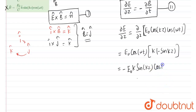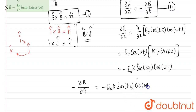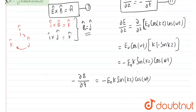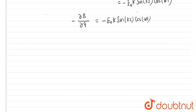E₀ and cos(ωt) are considered constant, and the differentiation of cos(kz) gives −k sin(kz). So we get: del E / del z = −E₀ k sin(kz) cos(ωt). We put that value from equation 1 into equation 2 and we get: del B / del t = −(−E₀ k sin(kz) cos(ωt)), so del B / del t = E₀ k sin(kz) cos(ωt).